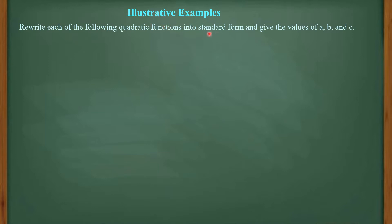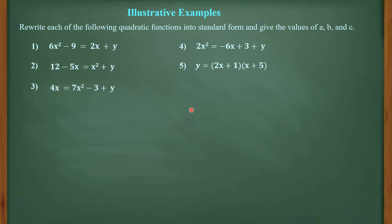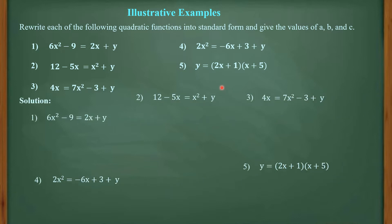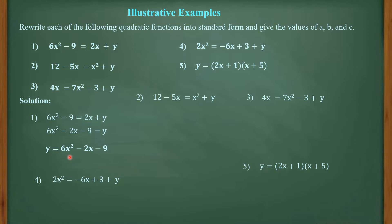Now we will have additional illustrative examples. We are asked to rewrite each quadratic function into standard form and give the values of A, B, and C. For number 1: 6x² − 9 = 2x + y. Arranging it following y = Ax² + Bx + C format gives 6x² − 2x − 9 = y. Applying the symmetric property of equality, this becomes y = 6x² − 2x − 9. Thus, A = 6, B = −2, and C = −9.